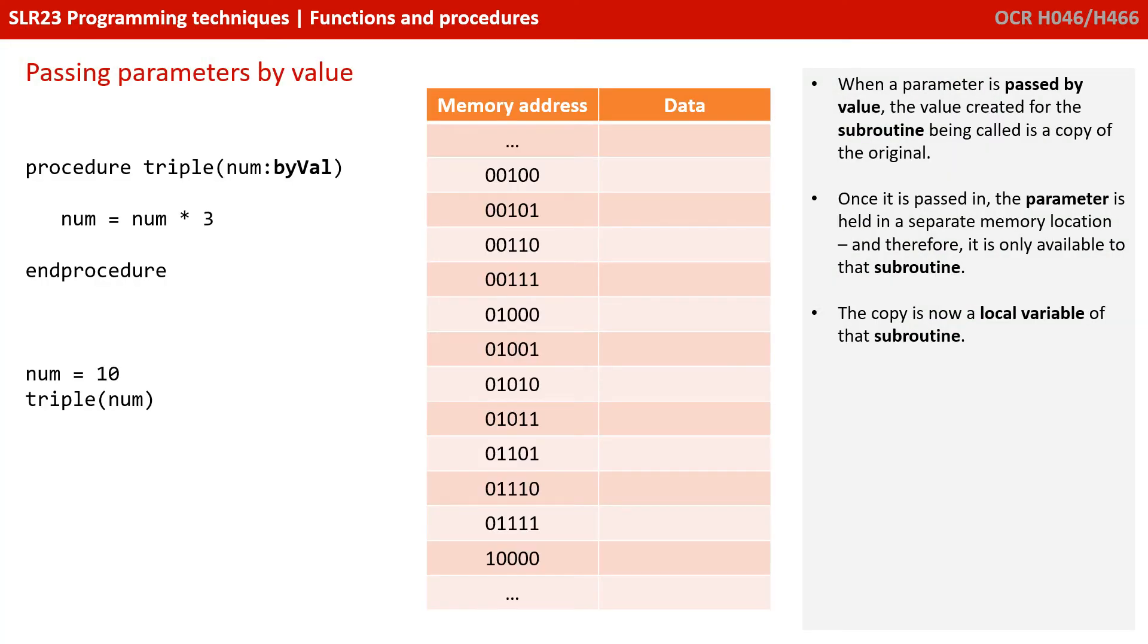When a parameter is passed by value, the value created for the subroutine being called is a copy of the original. Once it's passed in, the parameter is held in a separate memory location and therefore it's only available to that subroutine. The copy is now a local variable of that subroutine.